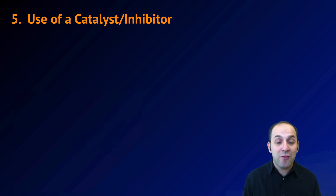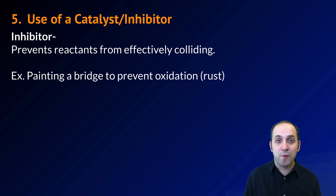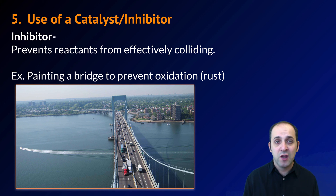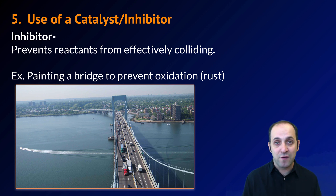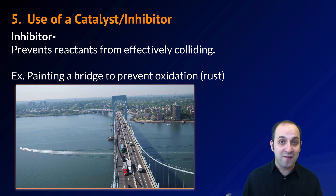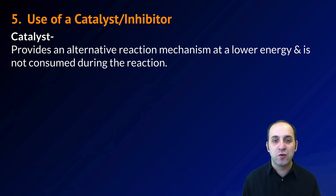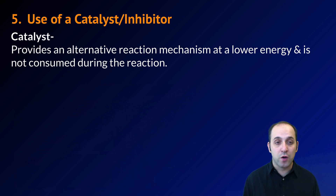Two factors that can affect the reaction pathway or mechanism would be the use of a catalyst or the use of an inhibitor. An inhibitor is something that prevents the reactants from effectively colliding. A good example is the painting of a bridge — large steel structures frequently have to be painted not just to look better, but to decrease the amount of rusting that occurs. Rusting occurs as the iron in the bridge comes into contact with the corrosive atmosphere, so by putting a layer of paint between the iron and the atmosphere, you greatly decrease the rate of oxidation. The opposite of an inhibitor is a catalyst — a catalyst increases the reaction rate by providing a different reaction mechanism that lowers the energy necessary for the reaction to occur, and as a result increases the rate of the reaction. The catalyst also remains unused in that reaction — it doesn't participate, it just makes the reaction happen over a different pathway.